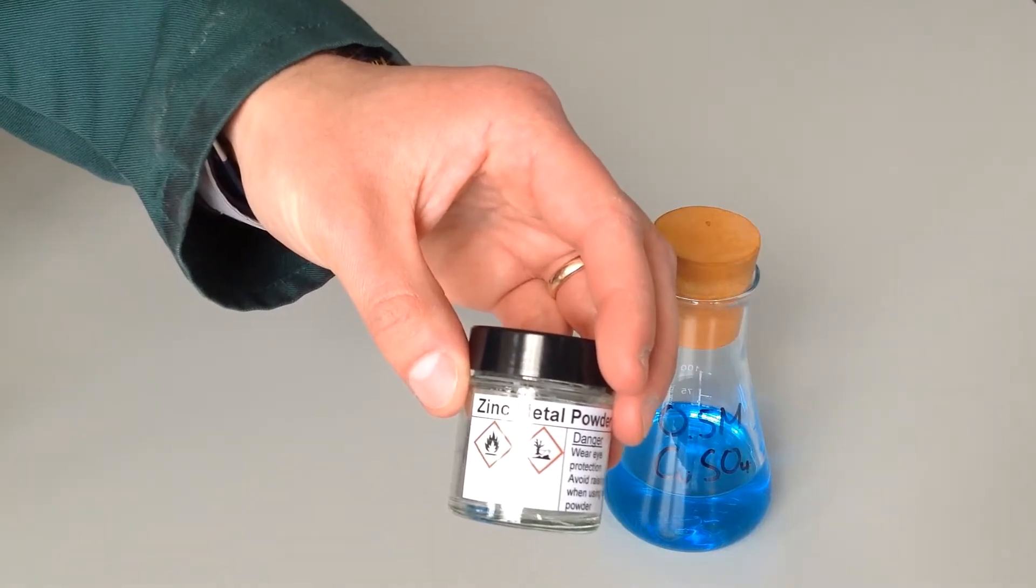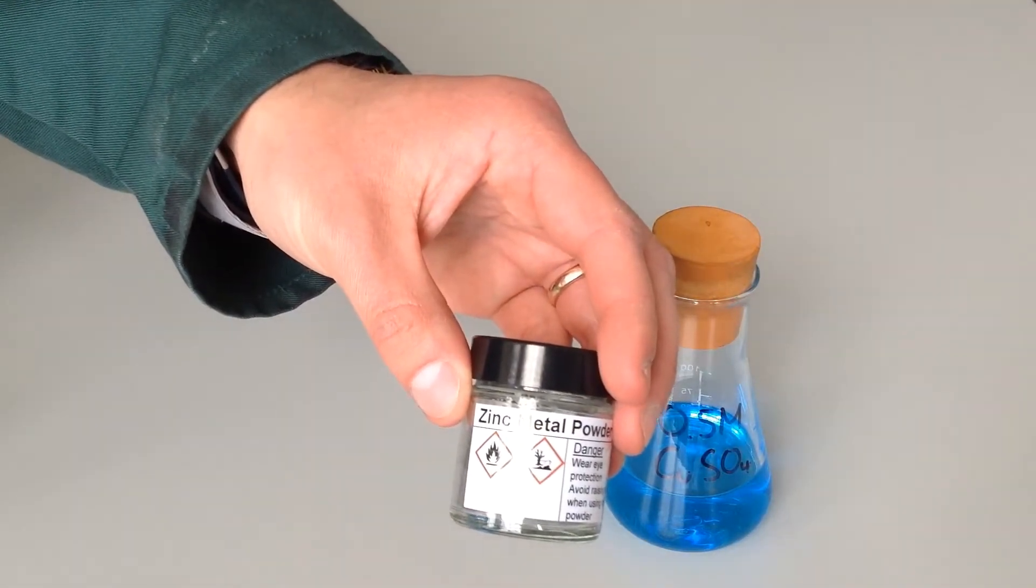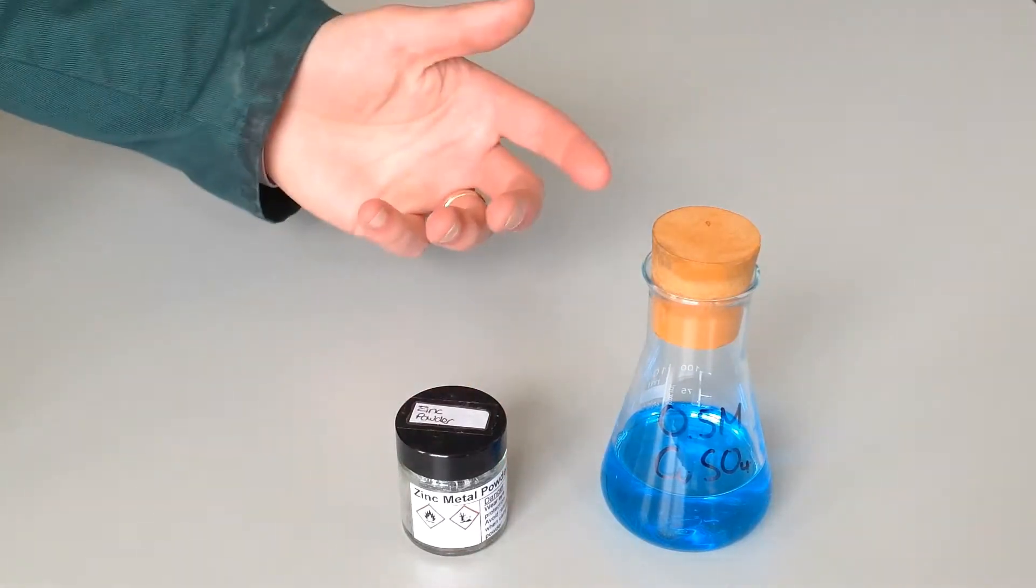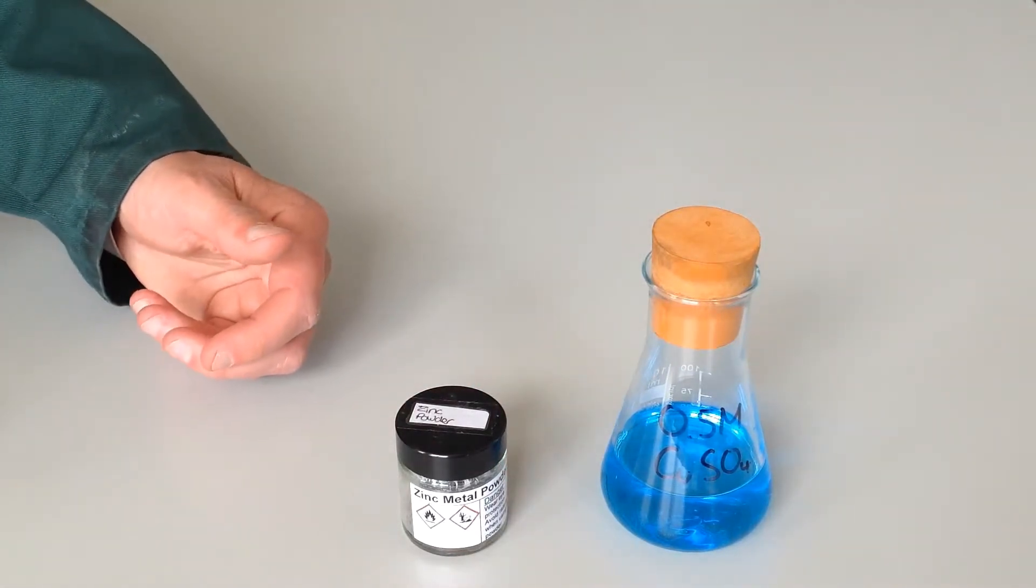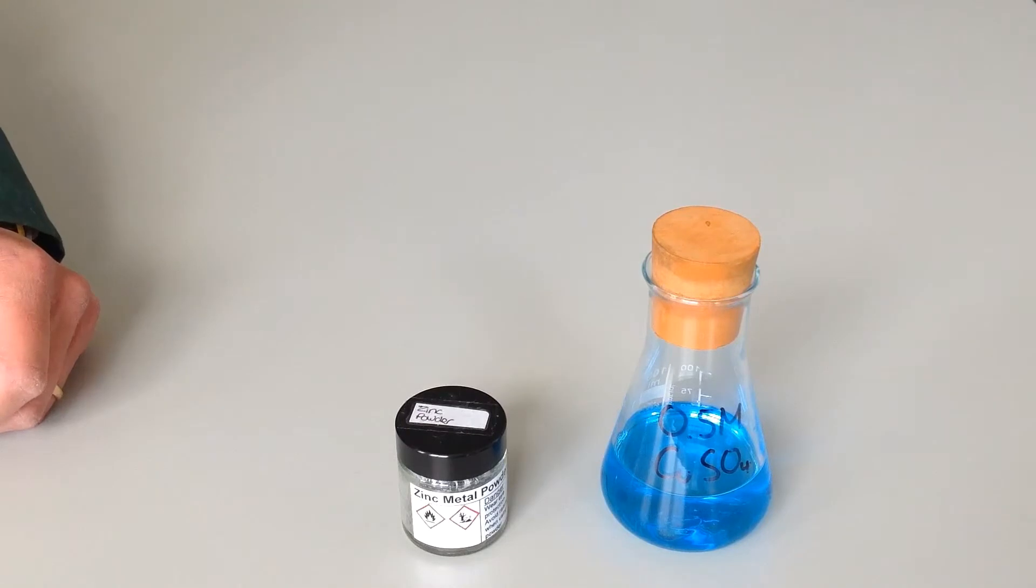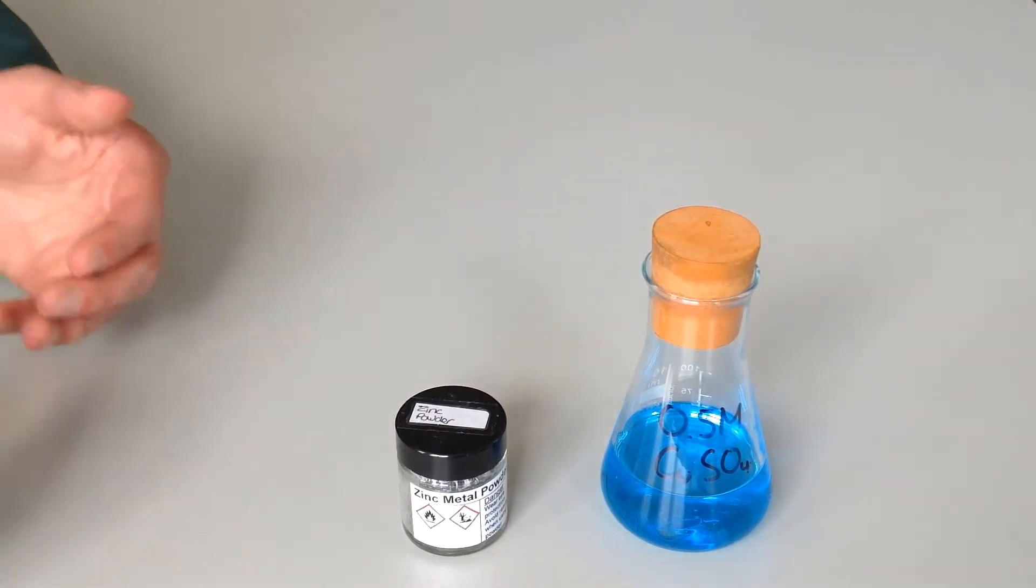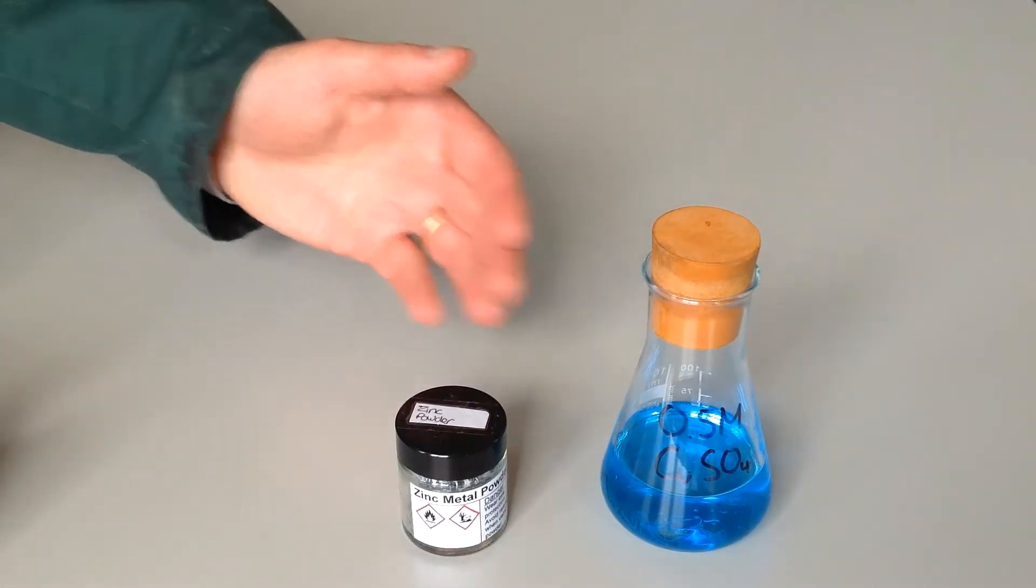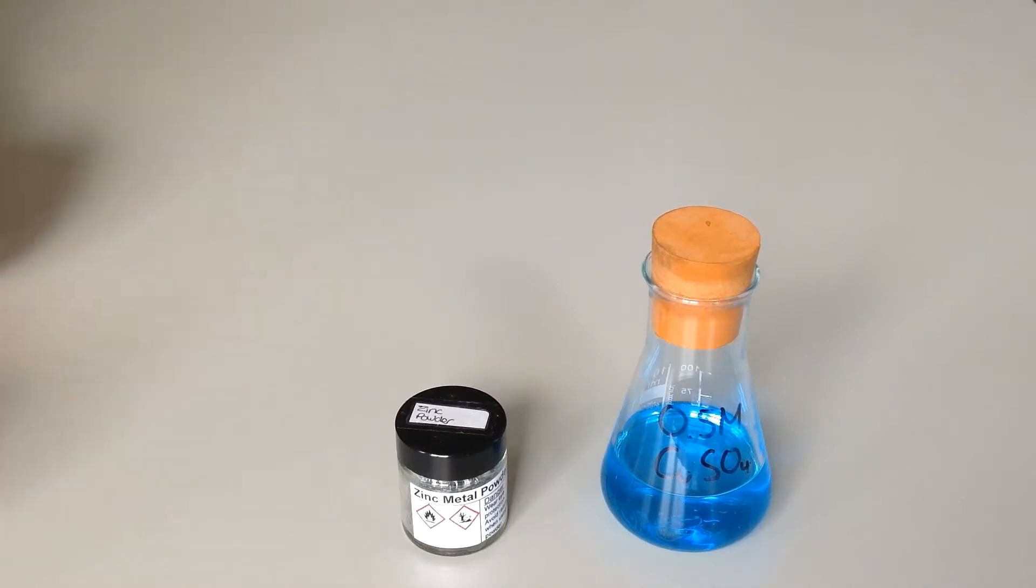It's also an environmental hazard, so we need to make sure that we dispose of our waste correctly. The copper sulfate solution is actually corrosive at this concentration, so again, some safety is needed there. Furthermore, we want to be able to do this fairly quickly so that we can investigate the effect of the concentration of copper sulfate or the mass of zinc powder or some other factor on the temperature change. So let's see how we'll do it.